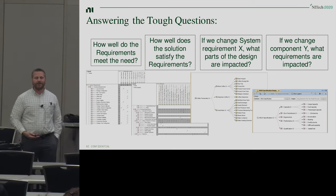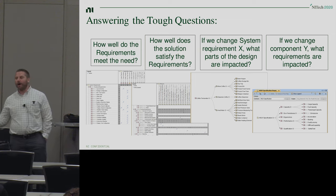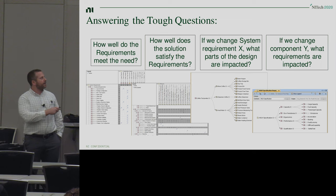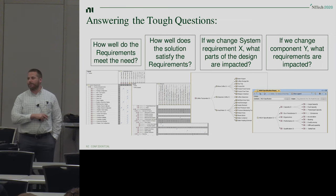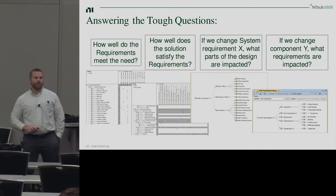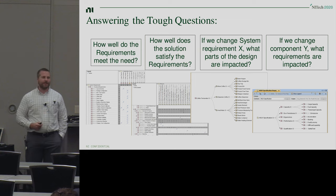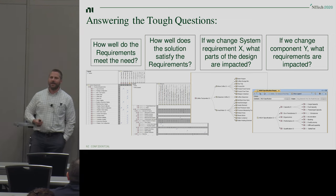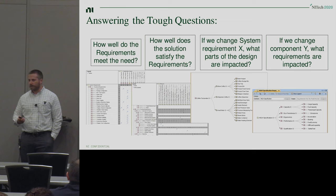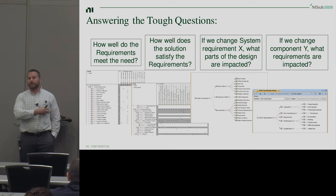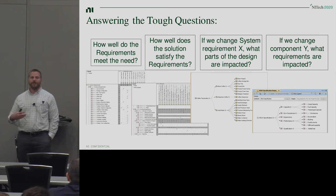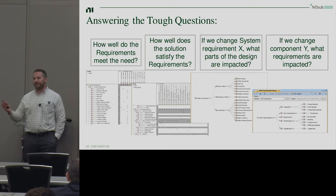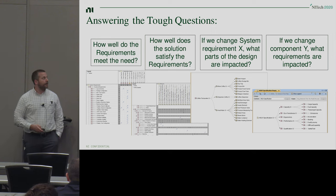I was disappointed to report that as the project went on, our model got stale. We were disciplined about using the modeling tool early in the project, but lost that discipline later. We started using other tools to manage the project, so the model got stale. That's the whole point of this — having a single source of truth. When you lose the single source of truth it gets very difficult to keep things in sync. So that's a little taste of model-based systems engineering, the way we applied it, the tool we used, and a little taste of the methodology.